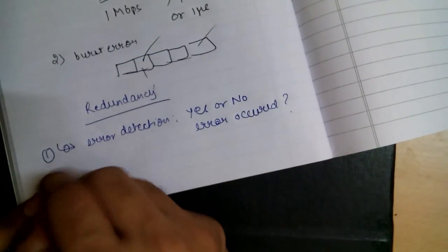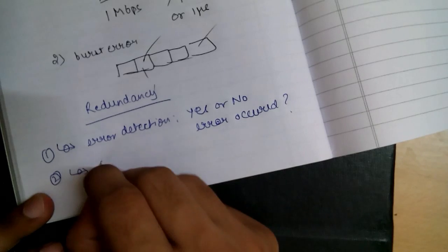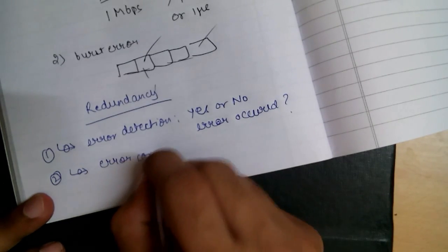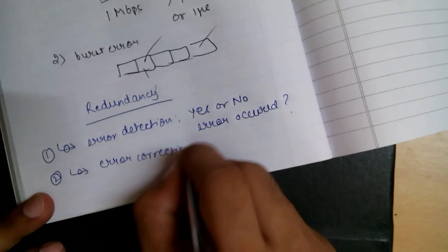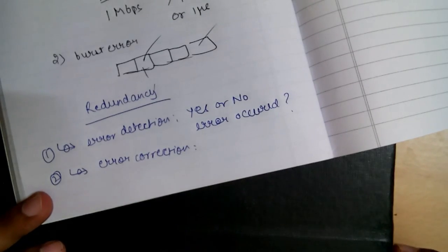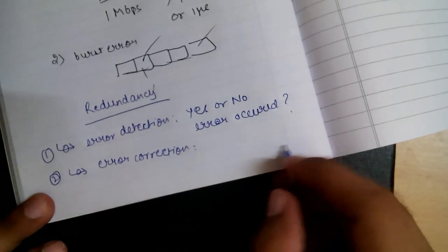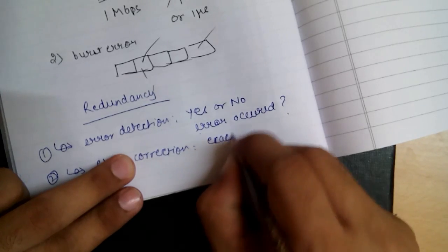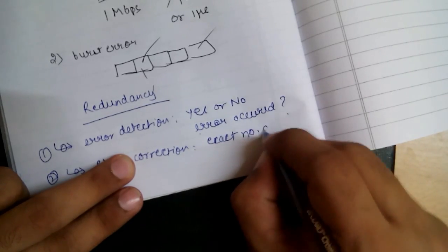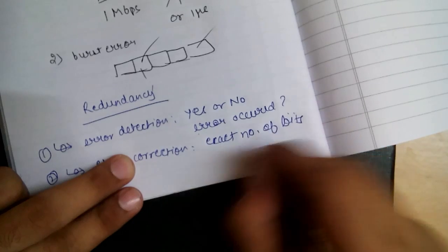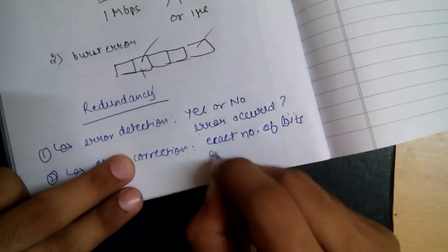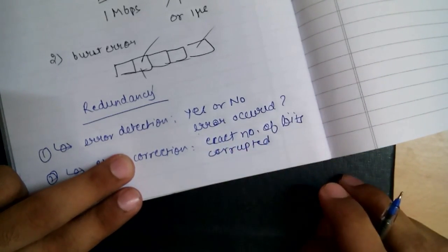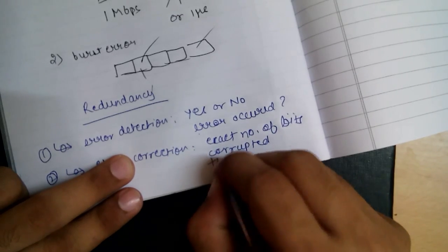The second is error correction, which is much more difficult to implement. In error correction, we want to know the exact number of bits that are corrupted as well as their location.